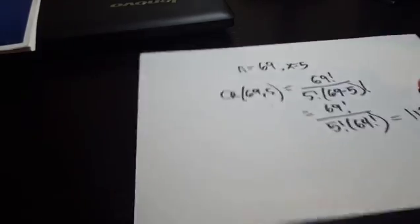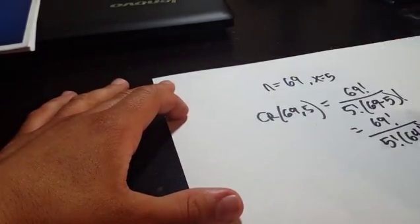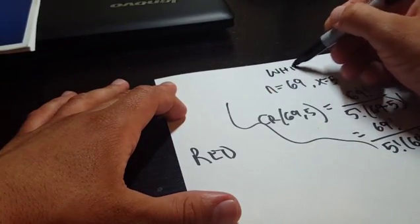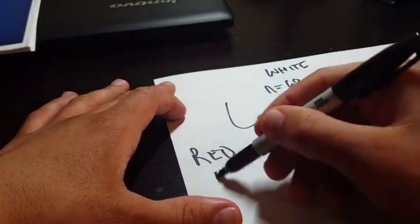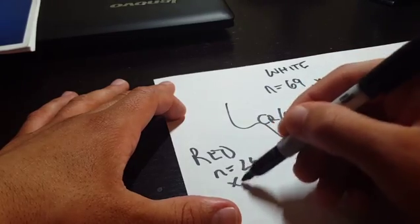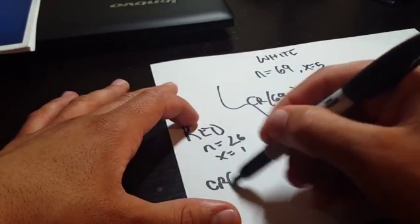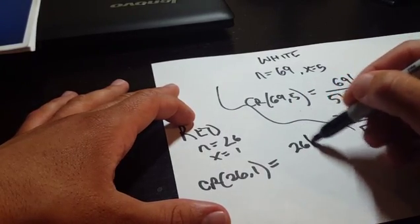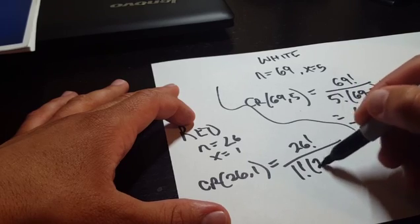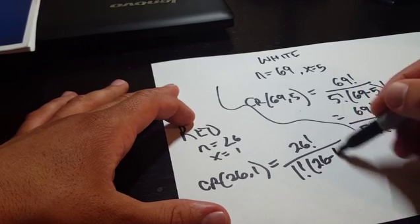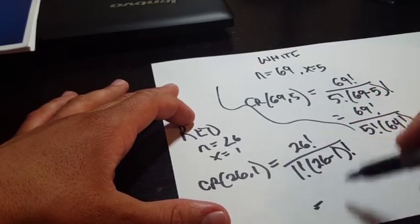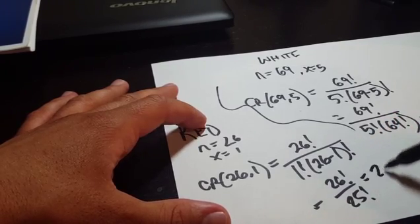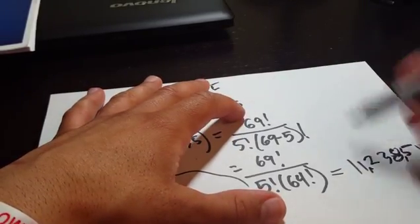Now we also have to take into account the Powerball red ball. For the red ball, n = 26 and x = 1. So C(26, 1) equals 26! over 25!, which simply equals 26.